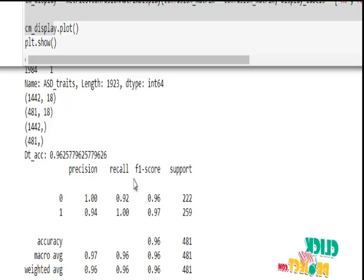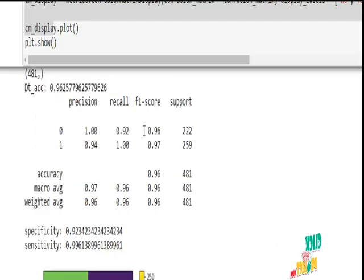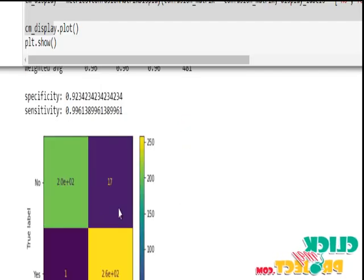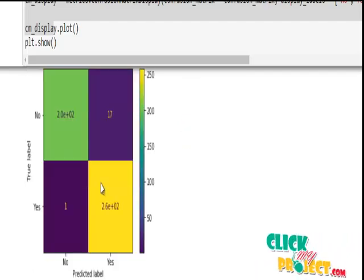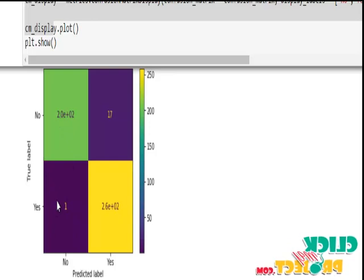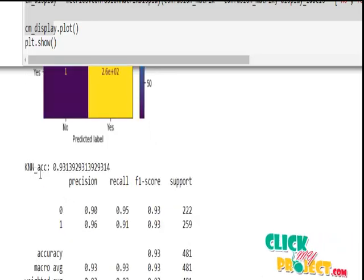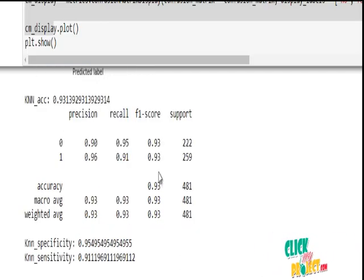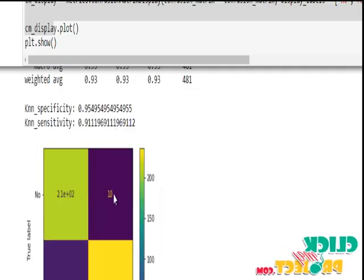After that, specificity and sensitivity values. This is the confusion matrix. The confusion matrix shows true positive, false positive, and false negative. The Decision Tree predicts the confusion matrix using this dataset. After that, we apply the K-Nearest Neighbor algorithm. The accuracy is 0.93. These are the precision, recall, F1 score for KNN, and the confusion matrix.